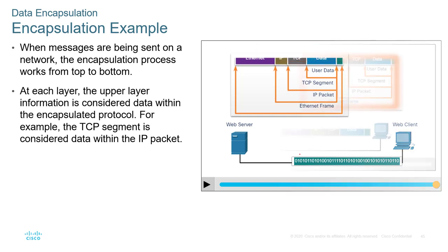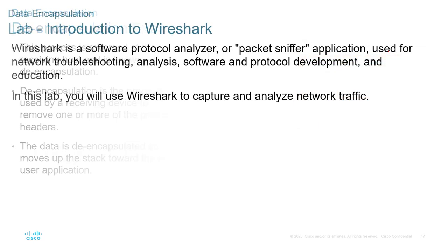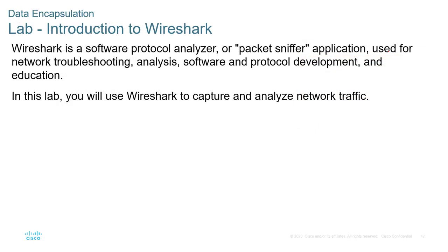At the other end, they take off each layer as it goes up the model. You can see the Ethernet header, which exposes the IP or logical header, then the segment or datagram header, then the actual user data. We do have a lab covering what this looks like on the wire in Wireshark.